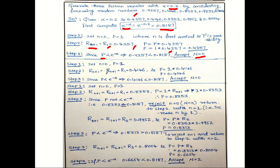Next, we repeat the same steps for the second random number. Set n equal to 0, p equal to 1. The second random number r2 equals 0.4146, so p equals 0.4146. Since p is less than e raised to minus alpha, this number is also accepted and n equals 0. This is the second Poisson random variate.